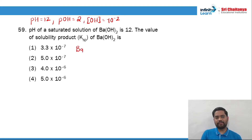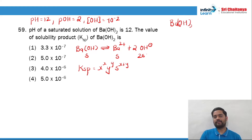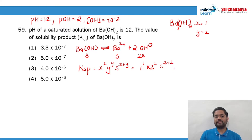Barium hydroxide dissociates as Ba²⁺ plus 2OH⁻. If S is the solubility of barium hydroxide, this will be S and the hydroxide will be 2S. Ksp will be equal to x^x × y^y × S^(x+y). For barium hydroxide, x = 1 and y = 2, so that gives 1¹ × 2² × S³ = 4S³.